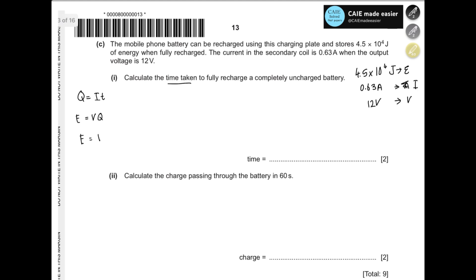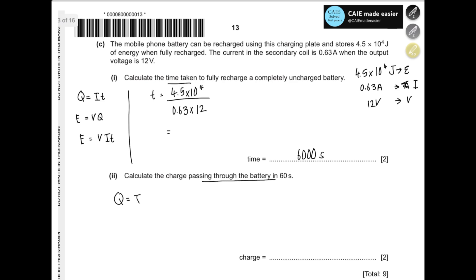E equals VIT, therefore time equals E divided by IV. Time = 4.5 × 10⁴ divided by 0.63 multiplied by 12, giving an answer of 6,000 seconds — that is when the battery is fully recharged. Calculate the charge passing through the battery in 60 seconds: Q = IT = 0.63 × 60 = 38 coulombs. At 60 seconds, 38 coulombs of charge passes through the battery.